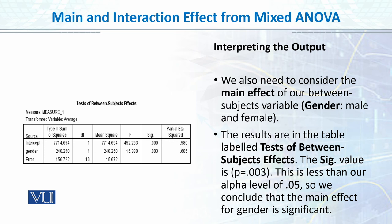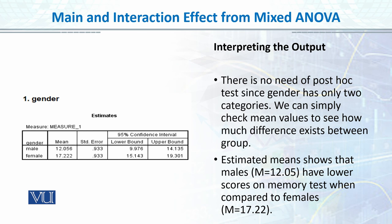इसके बाद हमारा test of between-subjects आता है। हमारा दूसरा variable जो between-subject यानी independent group वाला था वो gender था। उसके लिए gender का main effect देखते हैं — you see that this is the gender main variable, यह F की value है, यह degrees of freedom है, और यह P-value है। The results in the table labeled test of between-subjects: significance value is 0.003, which is less than our desired alpha 0.05, so we conclude that there is a main effect for gender — the main effect for gender is significant।